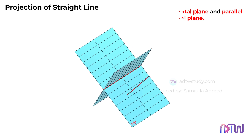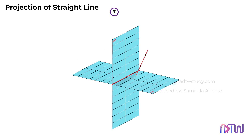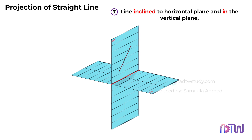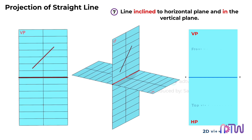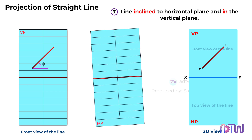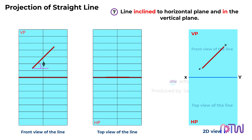Moving on to Position 7: the line is inclined to the horizontal plane and lies in the vertical plane. When we view from the front, the line appears at an angle. When we look from the top, the line appears on the reference line and looks shorter than the actual length.